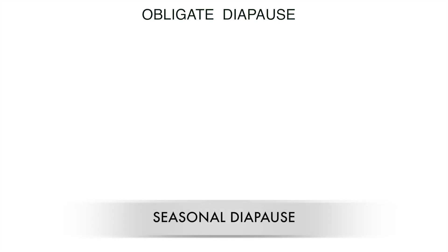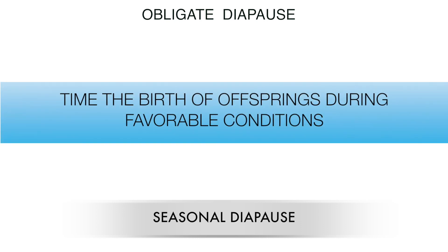Then we have obligate diapause, also known as seasonal diapause. This kind of diapause allows mammals to time the birth of offspring for favorable environmental conditions. It occurs in seals — if mating occurs, seals can delay implantation if gestation would otherwise end in winter. So seals pause implantation in order to elongate the gestation period, skip the winter, and then resume embryonic development again. This is how embryonic diapause, or delayed implantation, works in some mammals to evade harsh conditions and achieve a high survival rate for upcoming births.